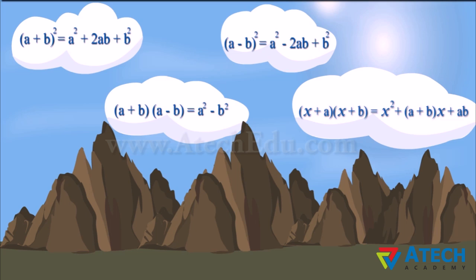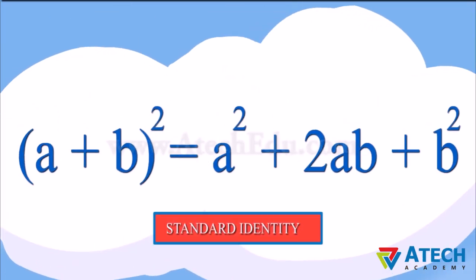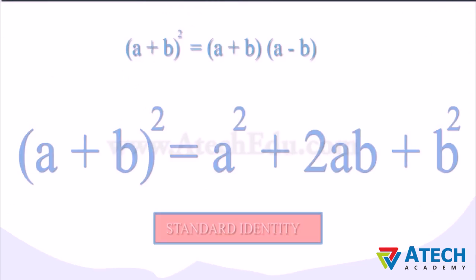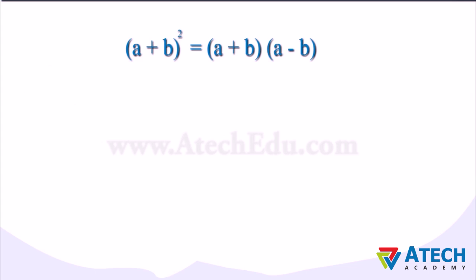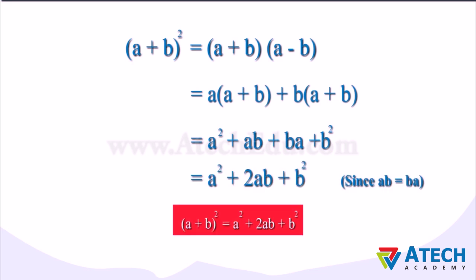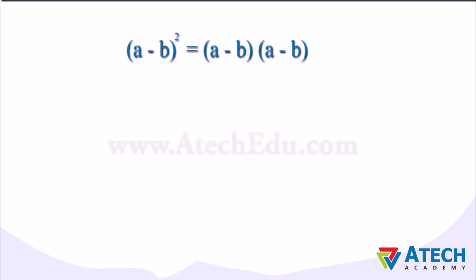There are some identities which are used frequently. Such frequently used identities are called standard identities. Let us check our first standard identity. It states that (A + B)² equals A² + 2AB + B². (A + B)² can be written as (A + B) multiplied by itself. Upon further simplification, it can be written as A multiplied by (A + B) plus B multiplied by (A + B). Solving further, we get A² + 2AB + B².